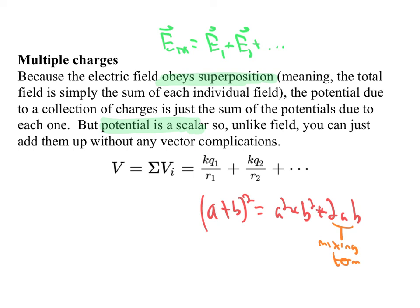The total potential then is just the sum of all the individual potentials. So it's KQ1 over R1 plus KQ2 over R2, where R1 is the distance of our point to the Q1 and R2 the distance of the point we care about to Q2, etc.